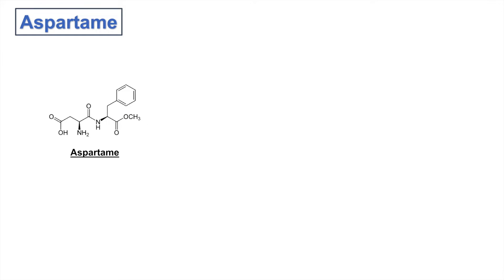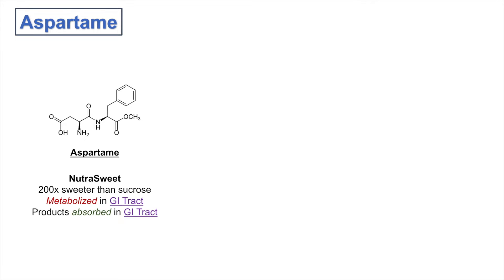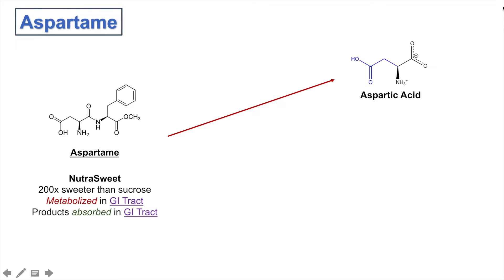The first one I want to talk about is aspartame. Aspartame is a very well-known sugar substitute, also known as NutraSweet. It is about 200 times sweeter than sucrose, and it is metabolized in the gastrointestinal tract, with its metabolic products actually absorbed in the GI tract. One of those products is aspartic acid — you can see its structure here, and this is the aspartic acid portion of aspartame.